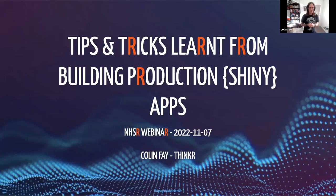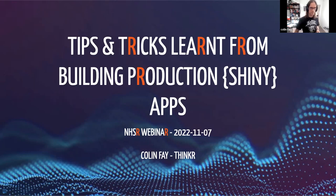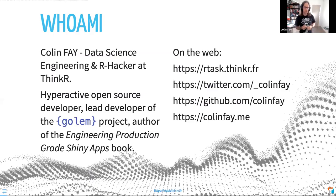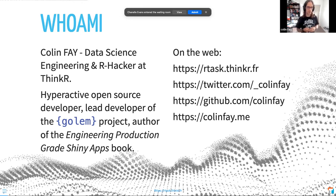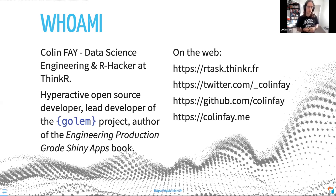Welcome to this talk called 'Tips and Tricks Learned from Building Production Shiny Apps.' My name is Colin Fay. I work for a company called ThinkR in France. I also do a lot of open source development. I'm the lead developer of the Golem project and I've written a book called 'Engineering Production-Grade Shiny Apps.' You can find me on the web at rtask.thinkr.fr, or you can reach out on Twitter or GitHub.